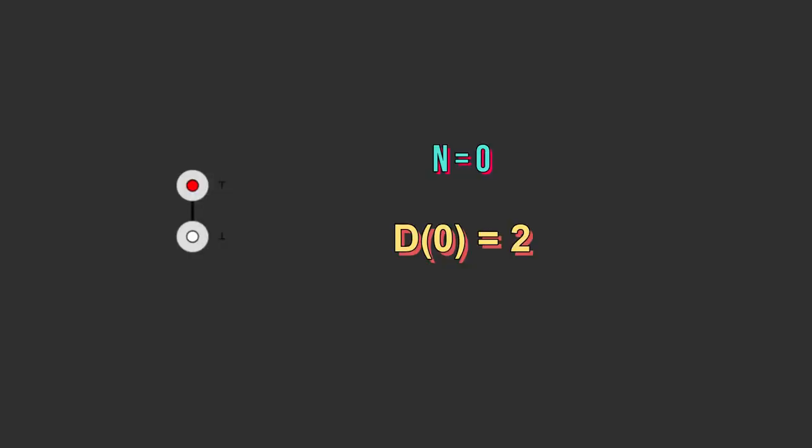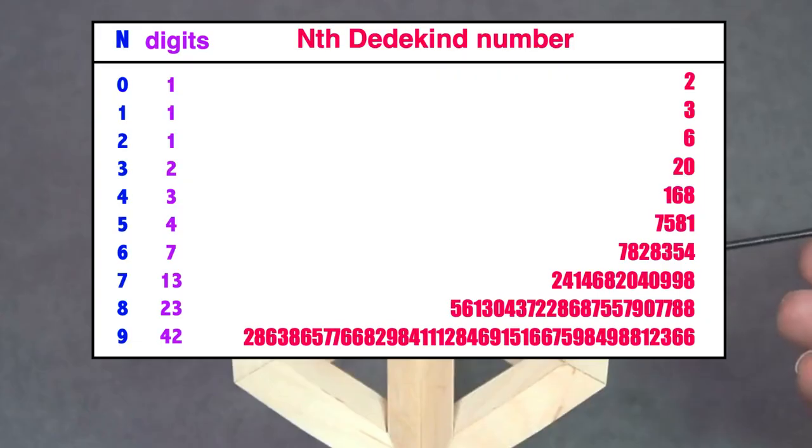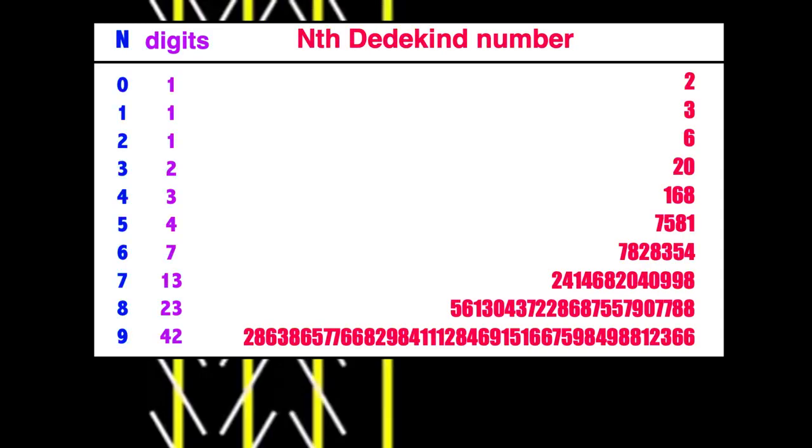Imagine a game where you need to balance a cube on one corner and paint the remaining corners either red or white. The catch is that you can never place a white corner between two red corners. By counting the different ways you can make these cuts, you arrive at the Dedekind numbers.